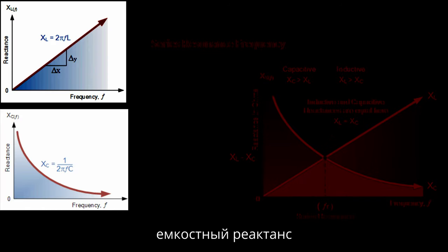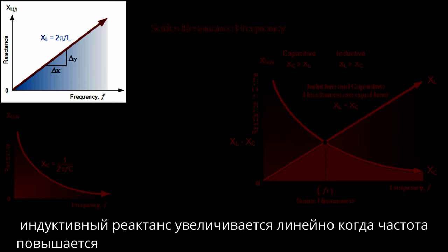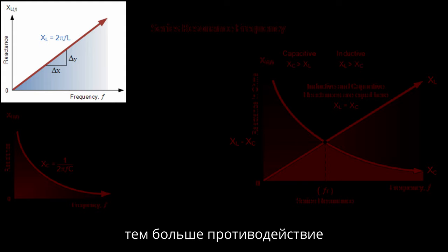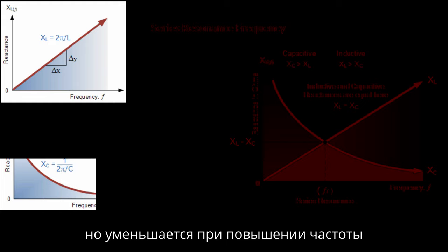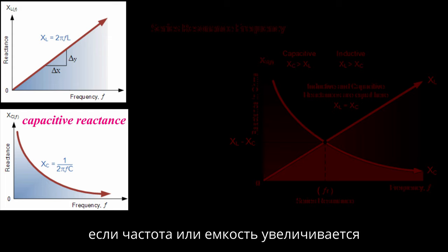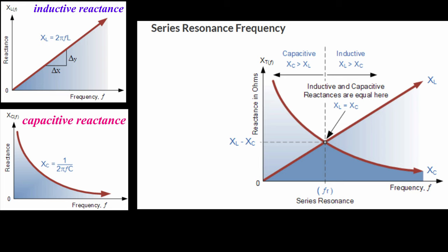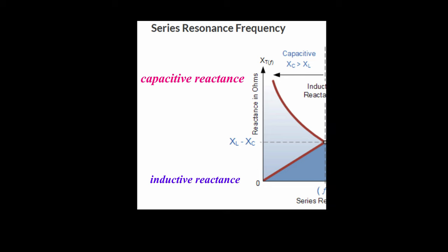We are dealing with inductive reactance and capacitive reactance, and we're going to look at resonance. The inductive reactance of an inductor increases linearly as frequency increases — it is positive and directly proportional to frequency. The higher the frequency, the more opposition it presents. The reactance of a capacitor has a very high value at low frequencies but quickly decreases as frequency increases — it is negative and inversely proportional to frequency. Electrical resonance occurs in an AC circuit when the two opposite and equal reactances cancel each other out as XL equals XC, at the point where the two reactance curves cross on the graph.